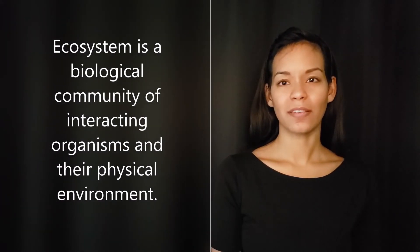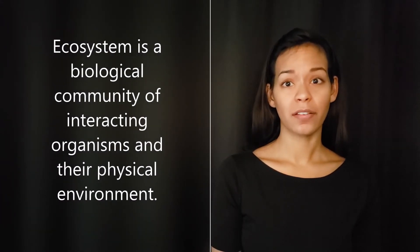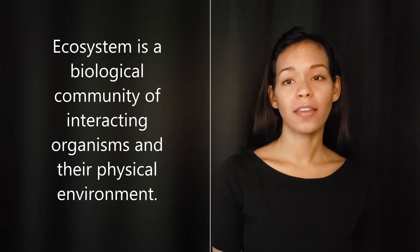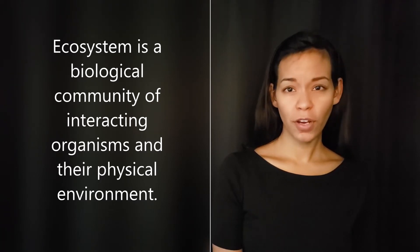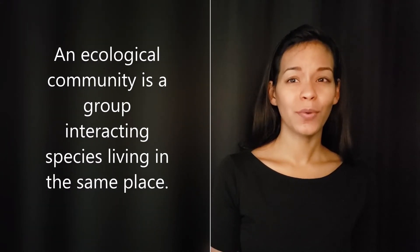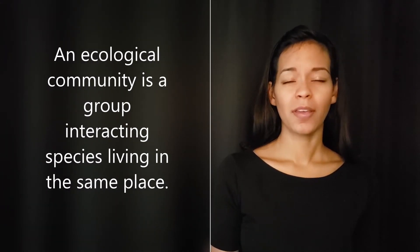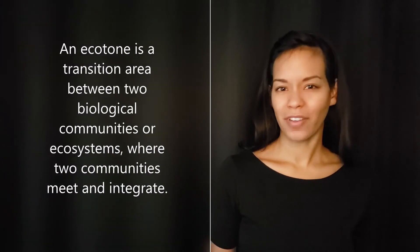An ecosystem consists of all organisms and non-living entities that occur and interact in a particular area at the same time. Ecological communities only include living organisms. In ecosystems, energy flows and matter cycle between the living and non-living components. Ecosystems interact with one another and the term ecosystem is most often used to describe somewhat self-contained geographic areas.